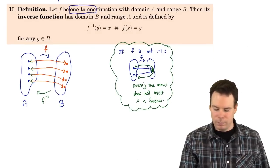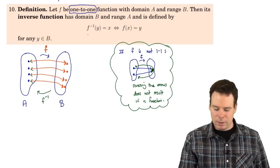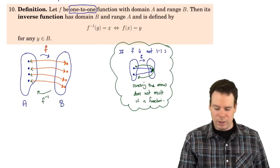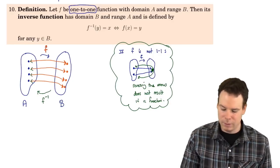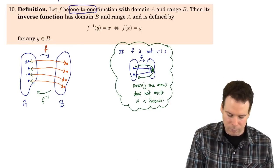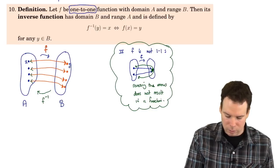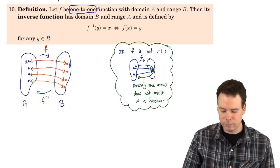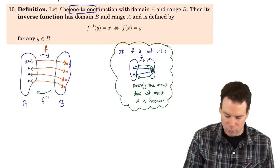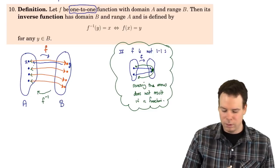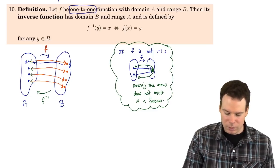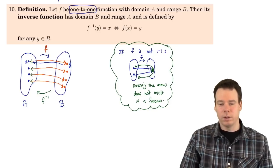Here is the definition written out: the inverse function is defined by f⁻¹(y) = x precisely when f(x) = y. So if we jot down x and y in our diagram, if f takes x to y, then f⁻¹ of y, following the arrow in the other direction, goes to x.